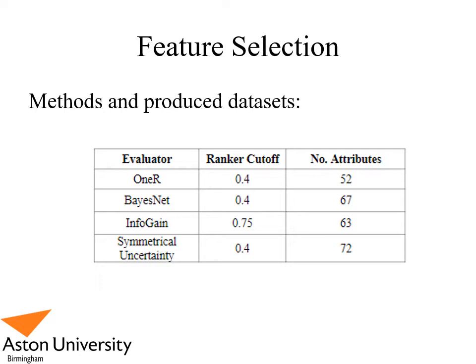Four methods of feature selection produce four new and final datasets to be classified by various algorithms. We chose the one rule, Bayesian network, Kullback-Leibler divergence, and symmetrical uncertainty datasets.